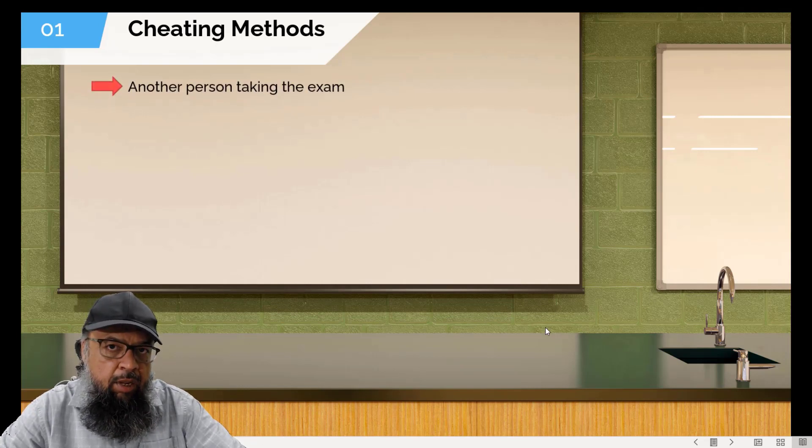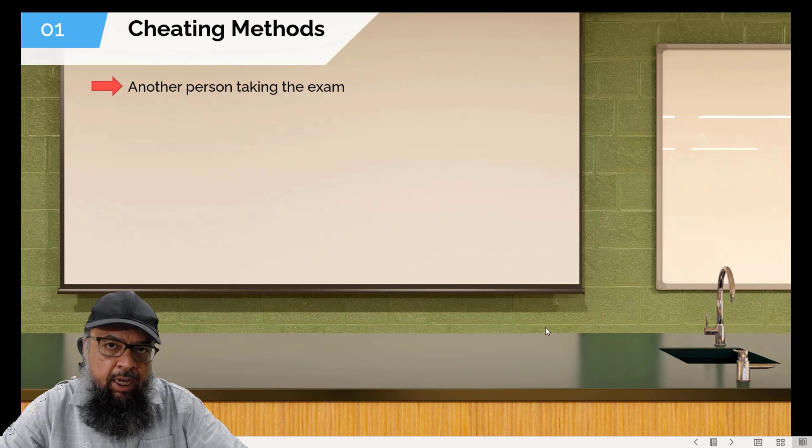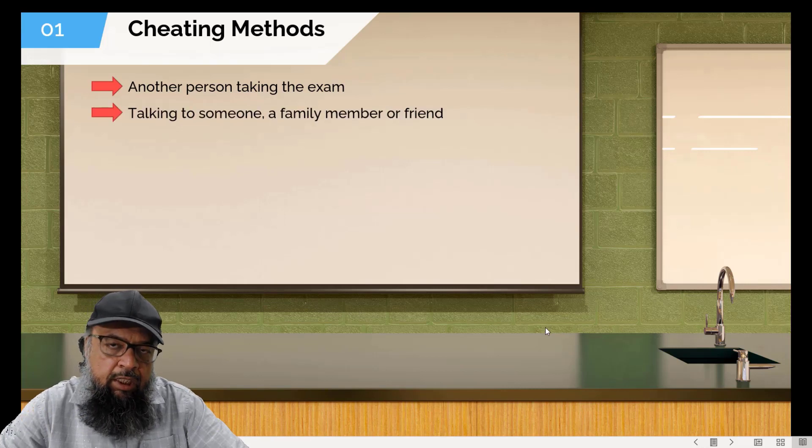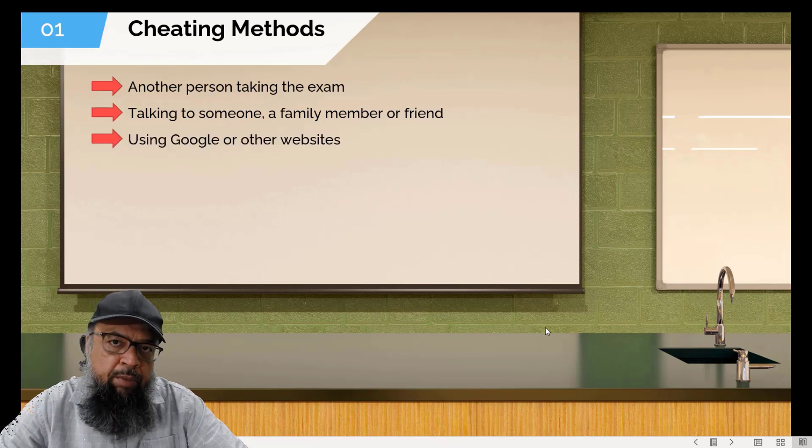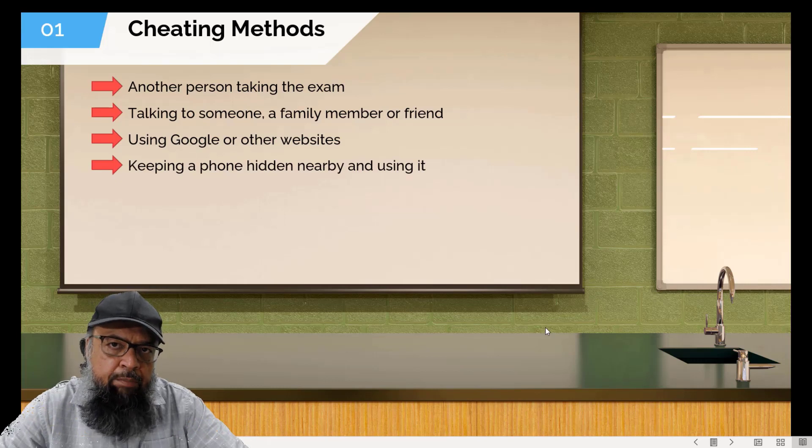The first method is called impersonation, when students arrange some other person to take the exam for them who is a subject expert. The other method is when students talk to someone from their family members or friend and seek help. Another popular method is to use Google to find answers, then probably the best method from a student perspective who wants to cheat is the ability to use a phone.